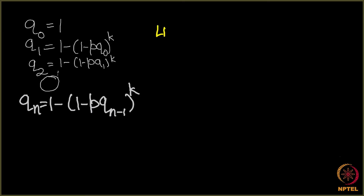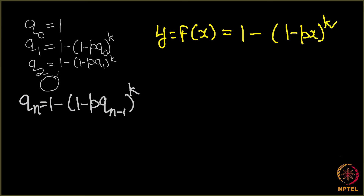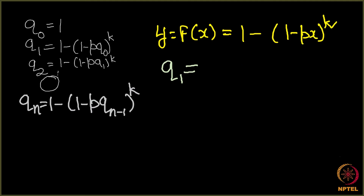We can write qn = 1 - (1 - p·q_{n-1})^k in the form of a function. Define f(x) = 1 - (1 - px)^k. In terms of this function, q1 = f(q0), since f(q0) = 1 - (1 - p·q0)^k, which is exactly the same expression.